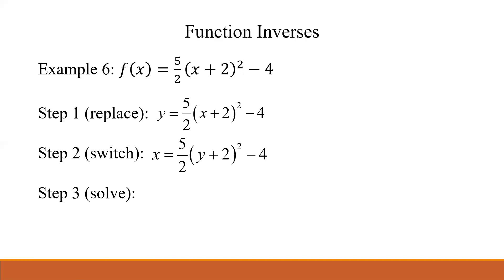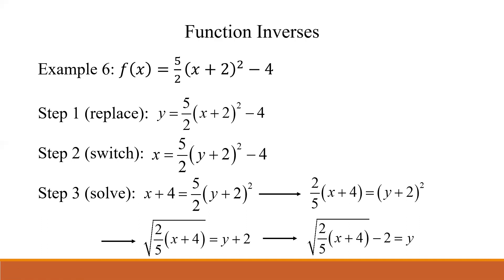So we just start solving this thing. What's the first thing you got to do? Well, you got to add 4, so we're going to add 4 to both sides. Now we got to undo the coefficient, that 5/2. We have to isolate that parentheses first. How do we undo a coefficient? Multiply by the reciprocal, which is 2/5. So multiply both sides by 2/5. Now we have to undo the squared power, so take the square root of both sides. And then just subtract 2. The important thing to note is that minus 2 is outside of the radical symbol. And then once you have that, you rewrite it with your function notation, and you are finished.